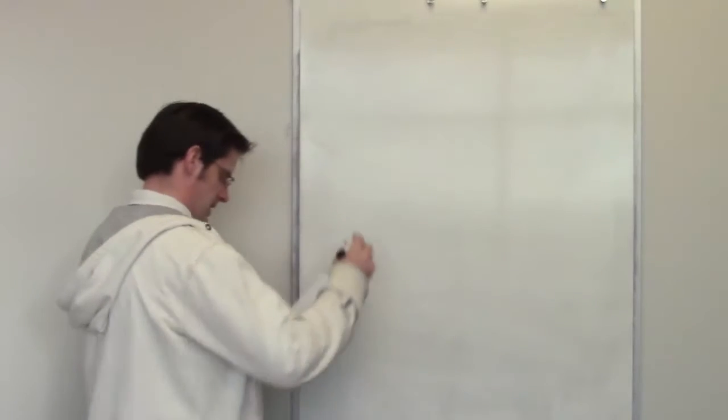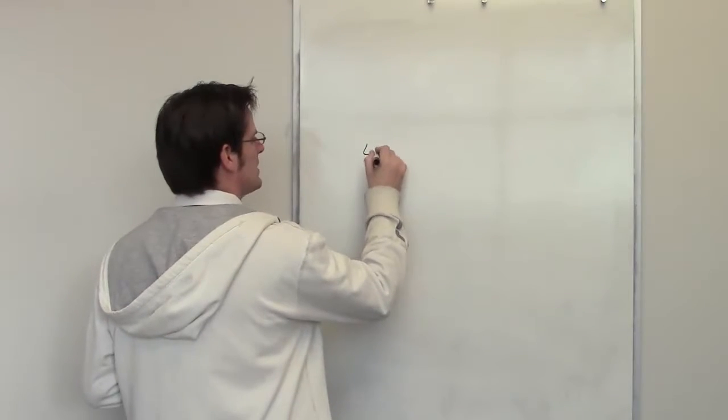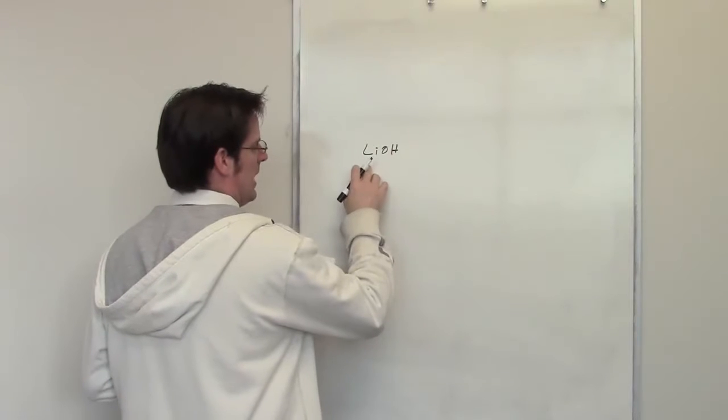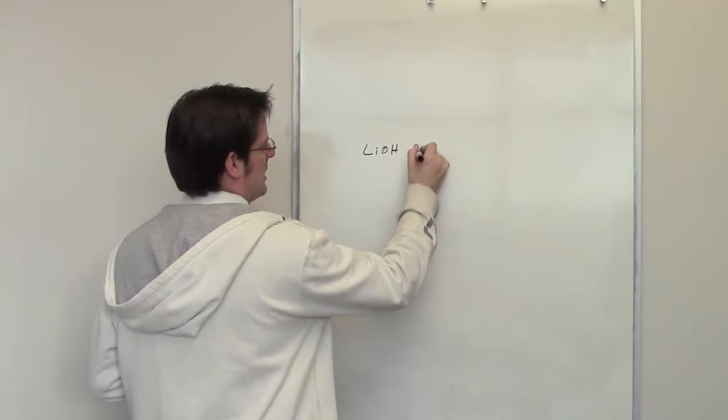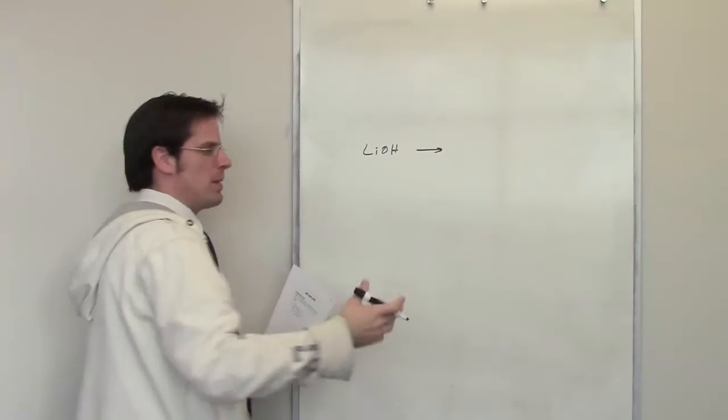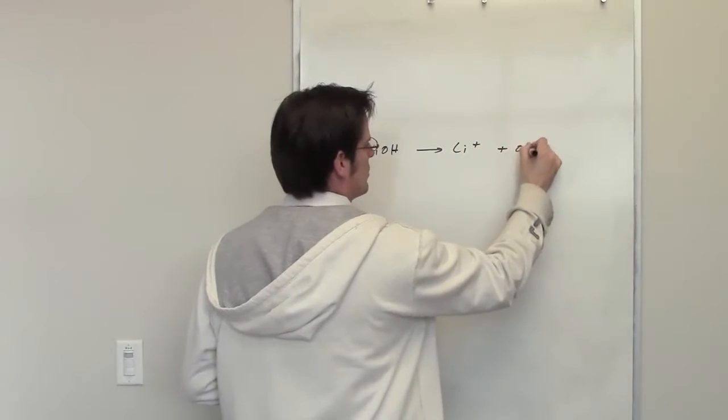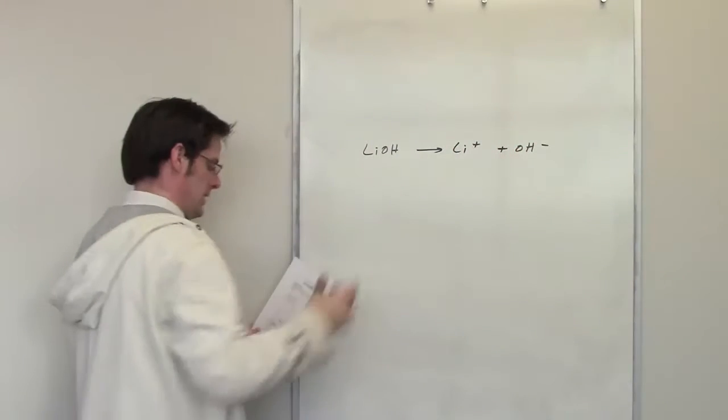Here's another fun problem. I've got lithium hydroxide, LiOH. It's once again a group one metal, an alkali metal, attached to hydroxide, which means it's a strong base. It will dissociate virtually 100% to form lithium and hydroxide in a one-to-one stoichiometric ratio.